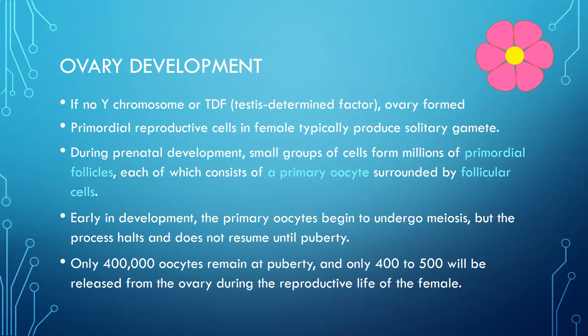If there are no Y chromosomes present, or this testis-determining factor present, then the ovary is going to be formed during embryonic development. The primordial reproductive cells in the female typically produce solitary gametes, meaning that your primordial stem cells — your egg stem cells — will only ever produce one egg at a time, whereas in males your sperm stem cells end up producing four sperm cells.